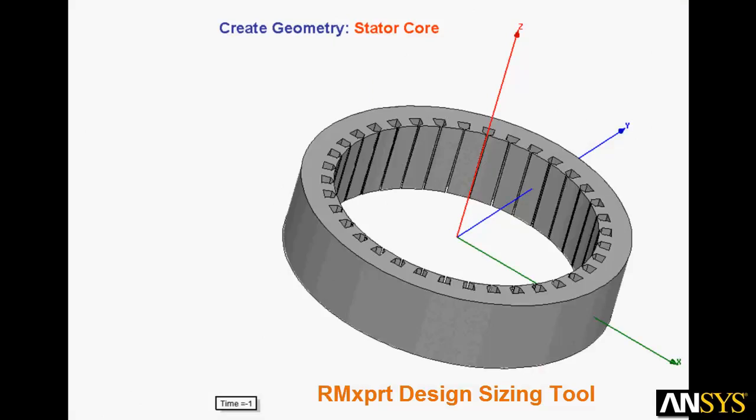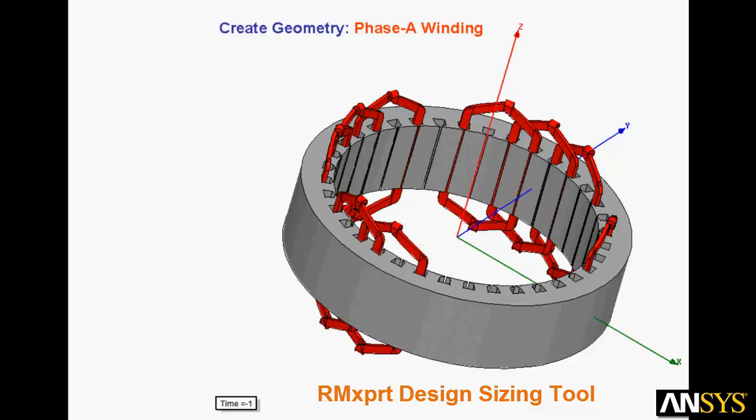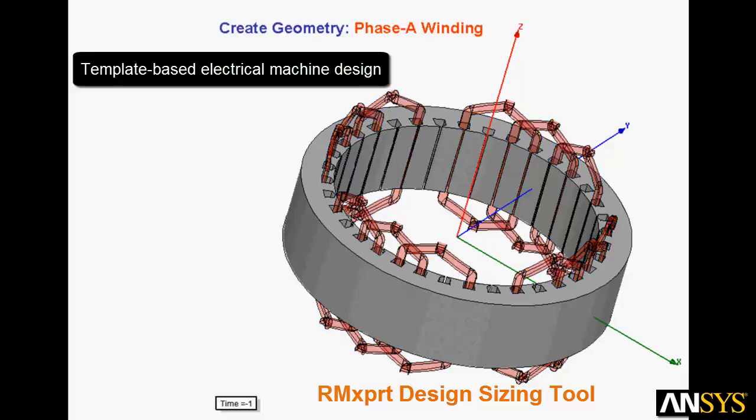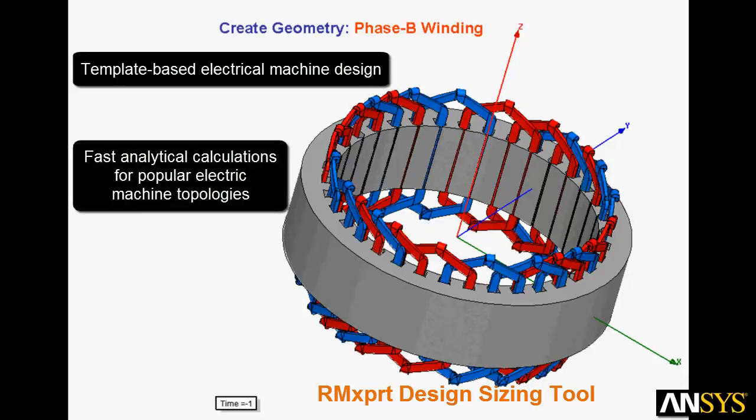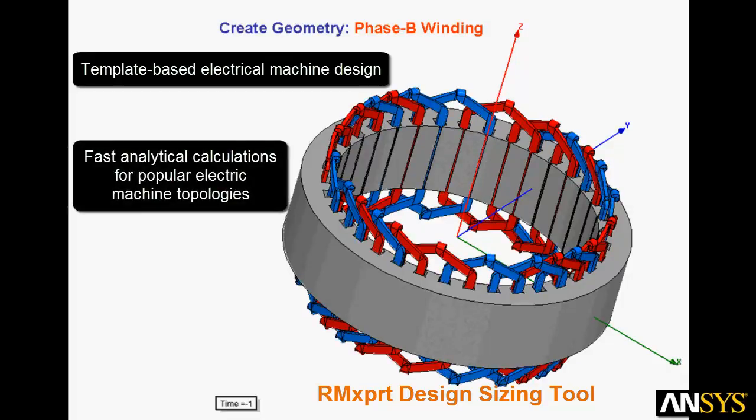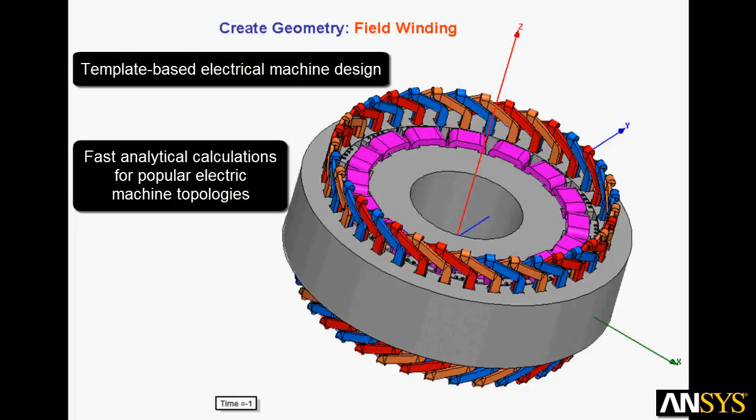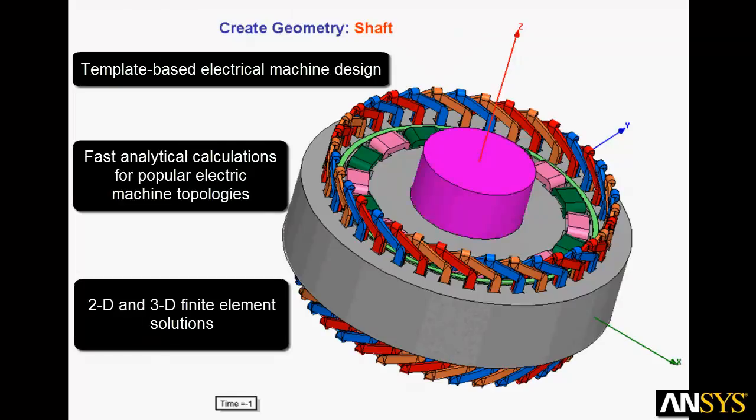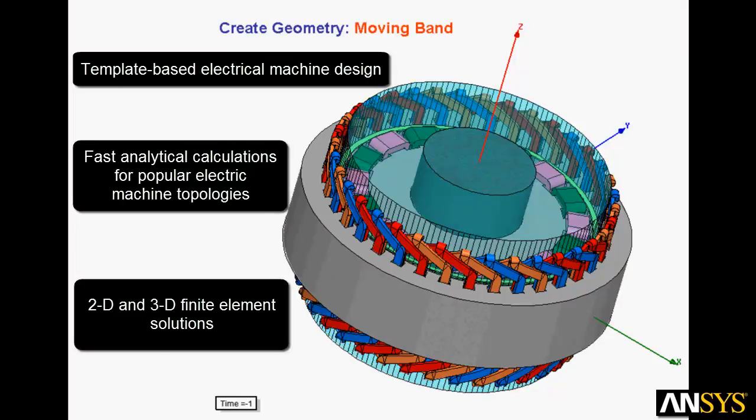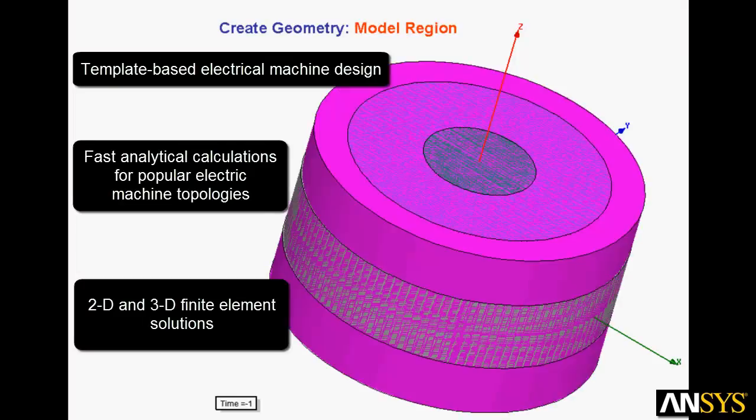The first step in the flow is to apply the ANSYS RMXpert design sizing tool. RMXpert is a template-based electrical machine design tool that provides fast analytical calculations of machine performance to allow engineers to zero in on an appropriate design. You can select from many motor types and create custom designs to your specifications quickly. It then creates ready-to-solve 2D and 3D models for detailed transient finite element calculations in ANSYS Maxwell.